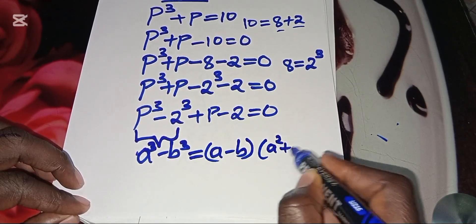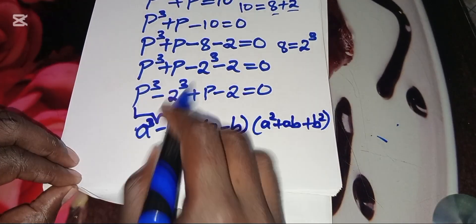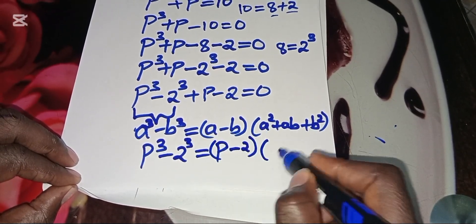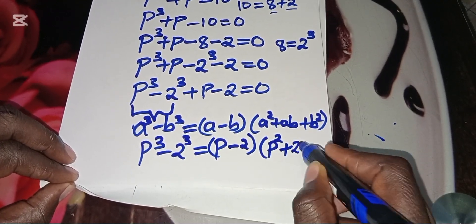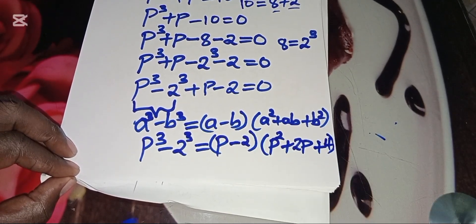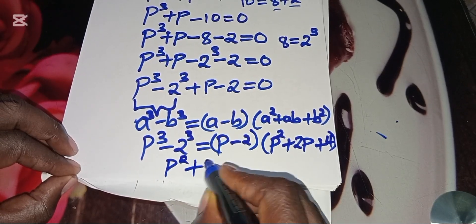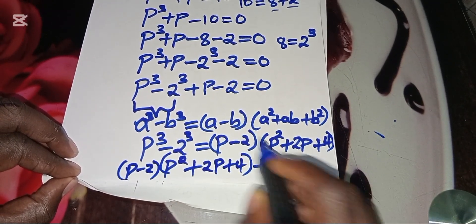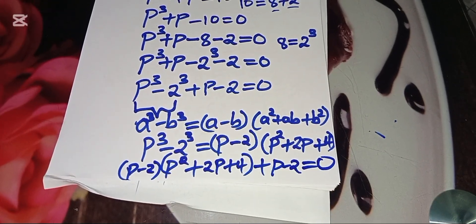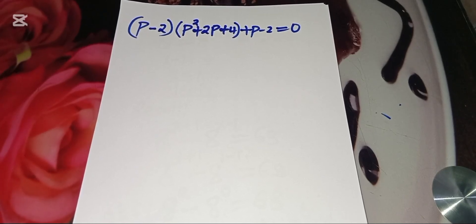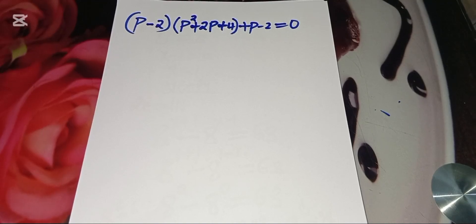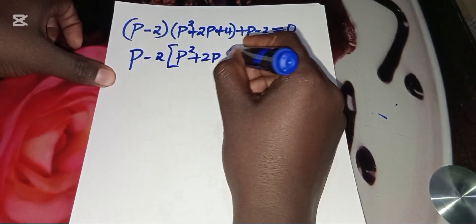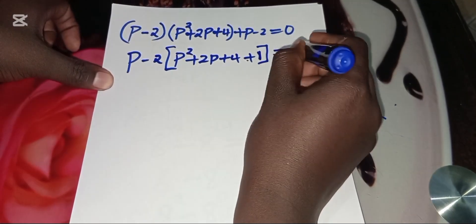The difference of two cubes is expressed as A minus B, times A squared plus AB plus B squared. In our case we have P cubed subtract 2 cubed, which we can express as P subtract 2, times P squared plus 2P plus 2 squared which is 4. So we're going to have P minus 2, times P squared plus 2P plus 4, plus P minus 2, equal to 0.